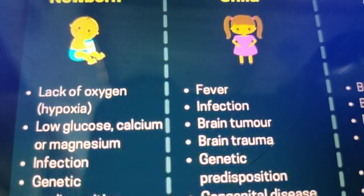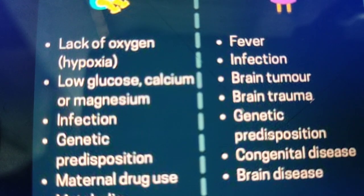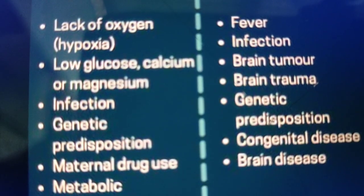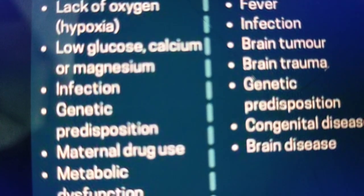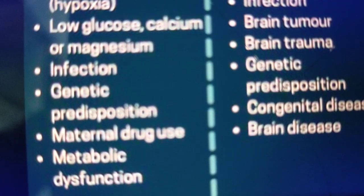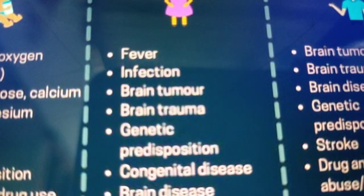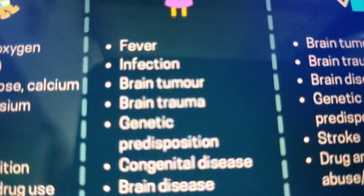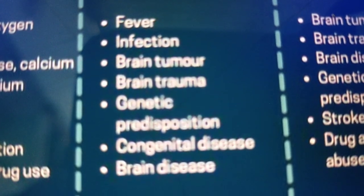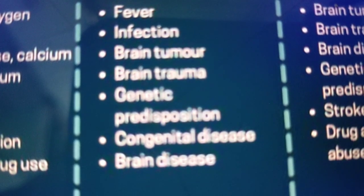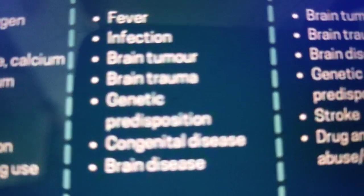Now let's look at the causes of seizures by age at onset. In newborns, causes include lack of oxygen (hypoxia), low glucose, low calcium, low magnesium, infection, genetic predisposition, maternal drug use, and metabolic dysfunction. In infants and children, causes include high fever (febrile convulsions), infection, brain tumor, brain trauma, genetic predisposition, congenital disease, and brain disease.